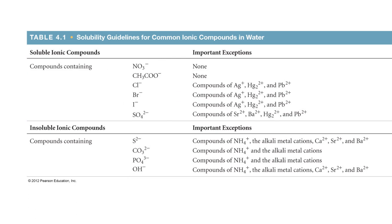Our soluble trends: nitrate and acetate are soluble without any exception — no metal cations paired with nitrate or acetate will make an insoluble compound. Chloride, bromide, iodide are generally soluble, but we have three exceptions: silver (Ag+), mercury(I) cation (Hg2²⁺), and lead(II) (Pb²⁺). An important key here is that Hg2+ alone is NOT an important exception. So for chloride, bromide, and iodide, you can write nine insoluble compounds for these ion combinations.